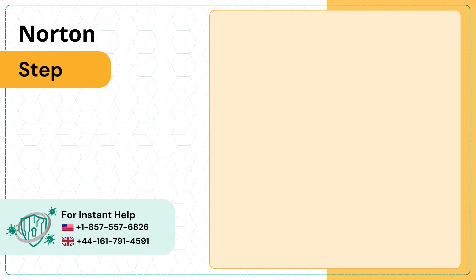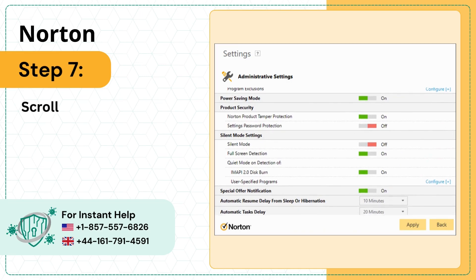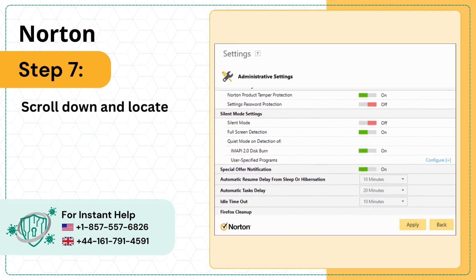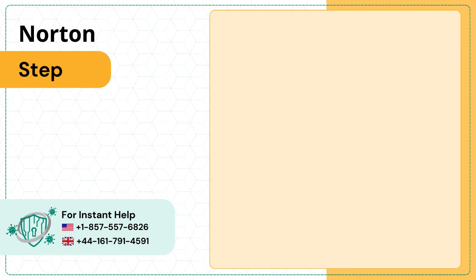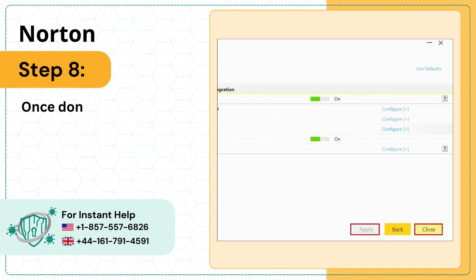Step 7: Scroll down and locate Special Offer Notification, then turn it off. Step 8: Once done, click Apply and close the window.